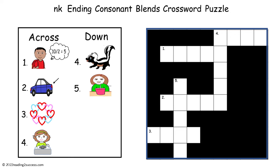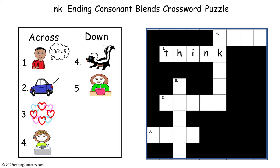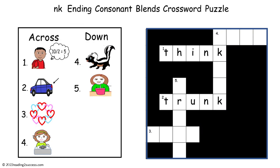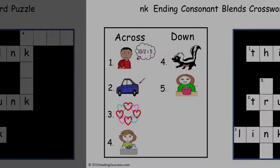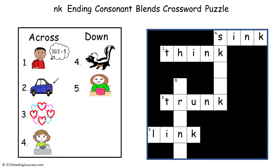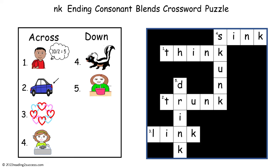Now have kids complete the NK ending consonant blends crossword puzzle. One across: think (T-H-I-N-K). Two across: trunk (T-R-U-N-K). Three across: link (L-I-N-K). Four across: sink (S-I-N-K). Four down: skunk (S-K-U-N-K). And five down: drink (D-R-I-N-K).